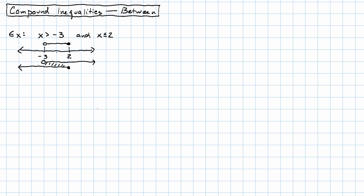In this case, where we have an and inequality, where the overlap is a line segment, we can rewrite it. We can rewrite that by stringing together two inequalities.